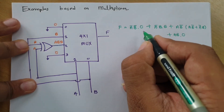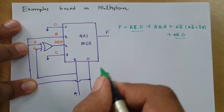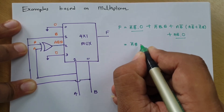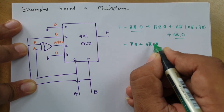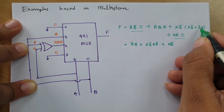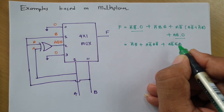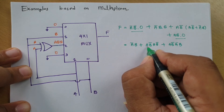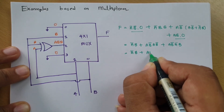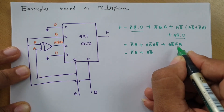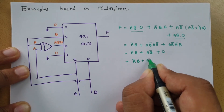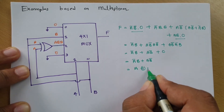Both the 0-valued terms get cancelled. Simplifying the remaining expression: Ā·B·B = Ā·B, and AB̄·(A XOR B) = AB̄·(AB̄ + ĀB). Expanding gives A·A·B̄·B̄ = A·B̄, and the cross terms A·Ā cancel to 0. So the simplified result is Ā·B + A·B̄, which is the XOR operation. Therefore, F = A XOR B.